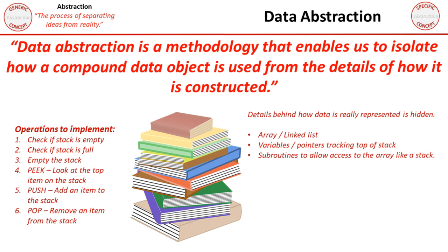Another example is a hash table. The hash table itself is an abstract data type. Behind the scenes, a hash table is often implemented with an array and a linked list to deal with collisions and overflow, where a linked list itself is an abstract data type, which is actually a series of individual memory locations with additional pointers to the next memory location. The point here is we can use abstraction — or more specifically data abstraction — to use compound data objects without actually knowing the details of how they're coded or implemented behind the scenes.